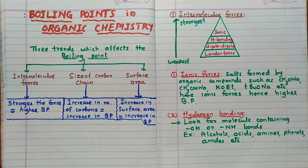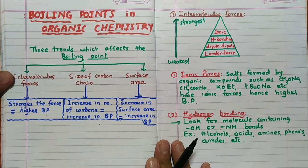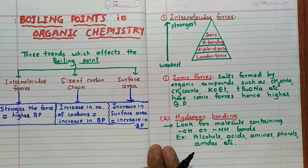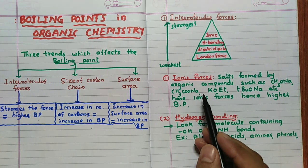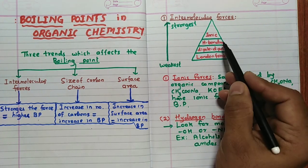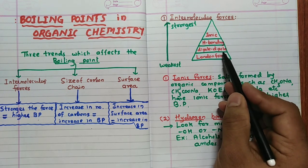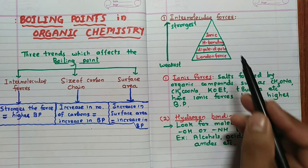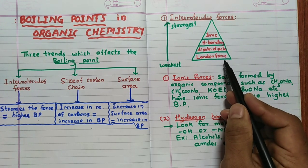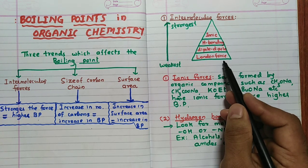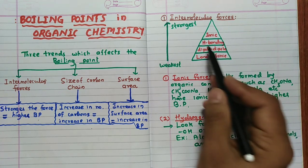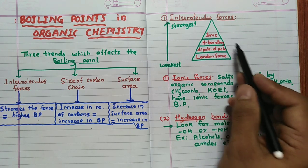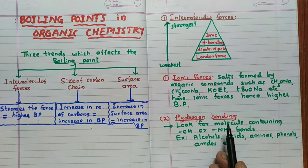Let us discuss each factor in detail. First, intermolecular forces: ionic forces are the highest, then hydrogen bonding, then dipole-dipole interaction, then London forces — also called dispersion forces — which are the weakest. So from weakest to strongest: London < dipole-dipole < hydrogen bonding < ionic bonding.